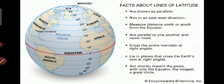The lines of latitude get shorter towards the poles. At the equator these lines are the longest, but as they move toward the north or south pole they become shorter and shorter. Latitude lines are called parallel lines and they move in an east-to-west direction.